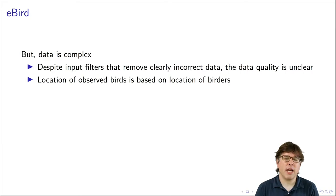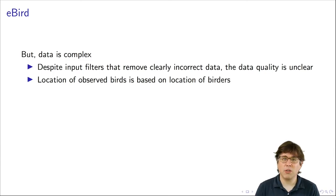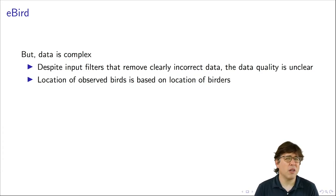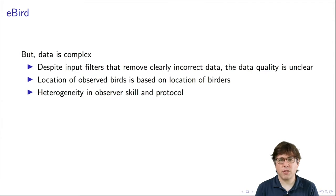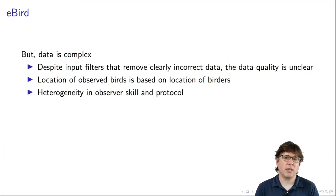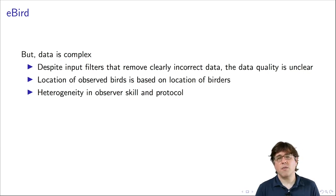Another problem with eBird is that if you look at where the observations of birds have happened, they all tend to be very close to roads. This is not because birds live only near roads, but because people generally are close to roads. In very remote areas with no roads, it looks like there are no birds, but we know that's probably not true. There is also a lot of heterogeneity in observer skill — some people are good at identifying birds, some are not — and heterogeneity in the protocol that birders use. The protocols used by volunteers are less rigorous and less standardized.